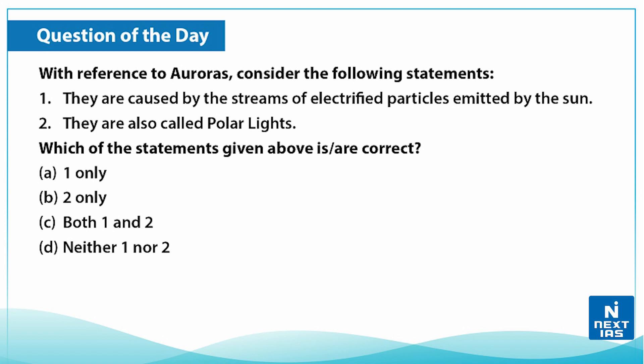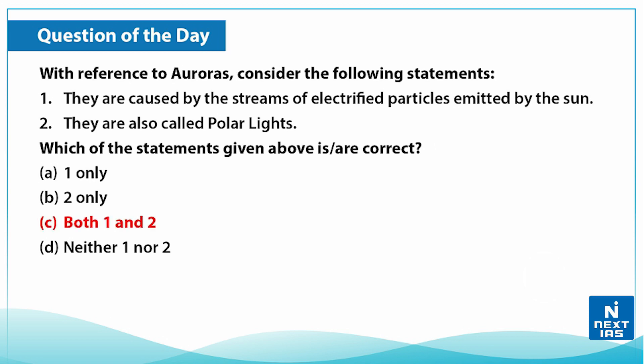Let's take a quick practice question on this topic. With reference to auroras, consider the following statements: first, they are caused by streams of electrified particles emitted by the sun; second, they are also called polar lights. The correct answer is C — both statement one and two are correct.